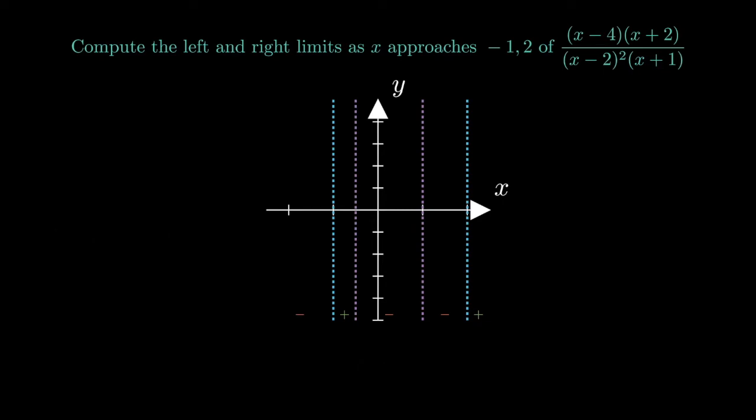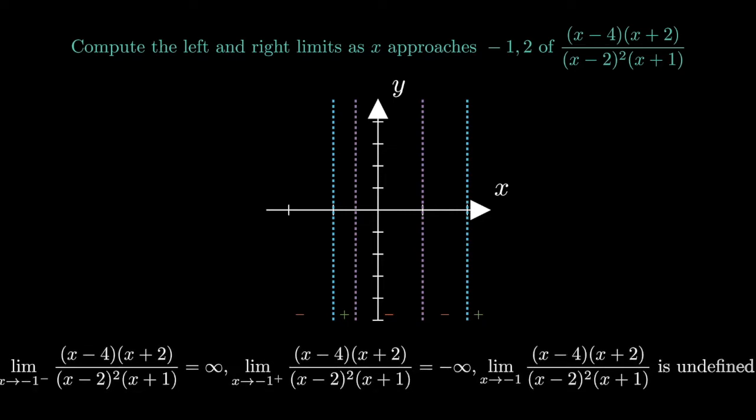This means that at x equals minus 1, the limit from the left is positive infinity, and the limit from the right is negative infinity, and the limit is undefined.